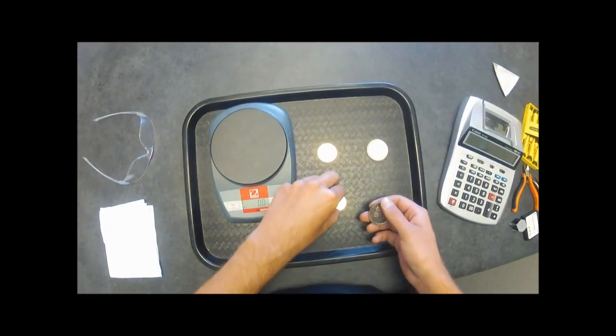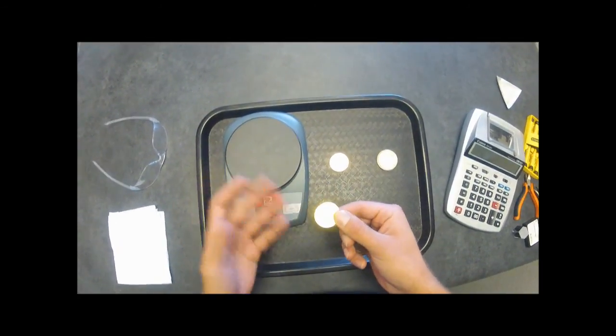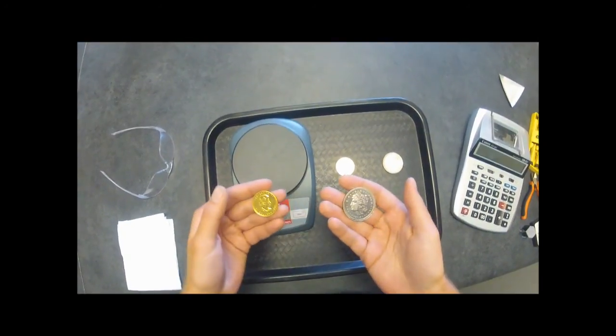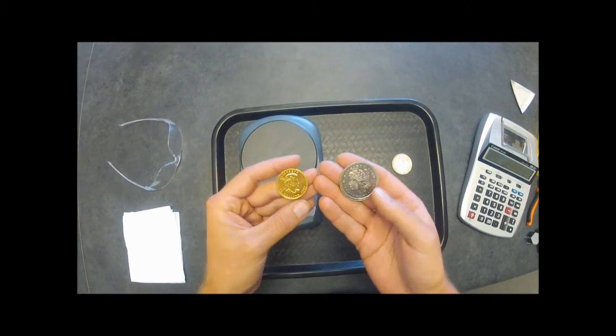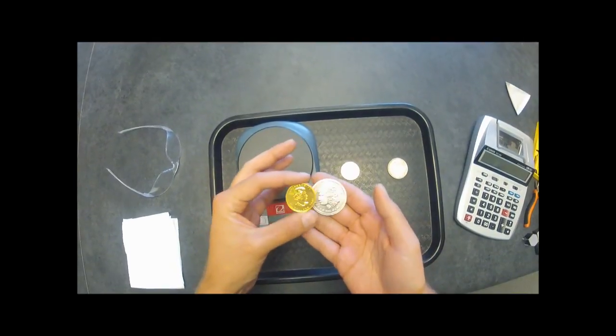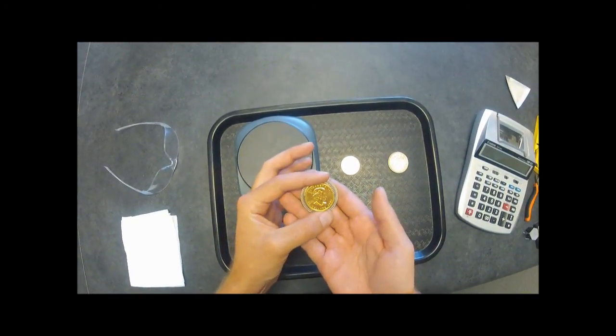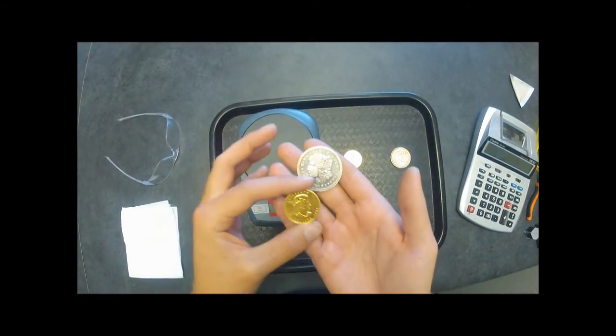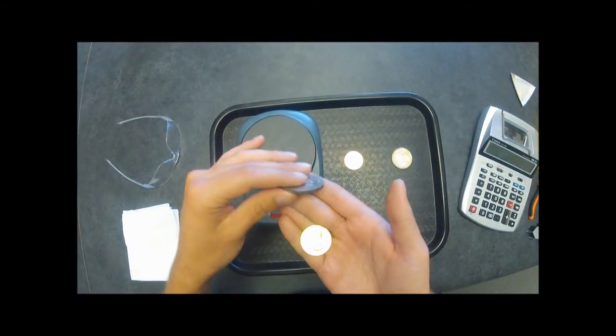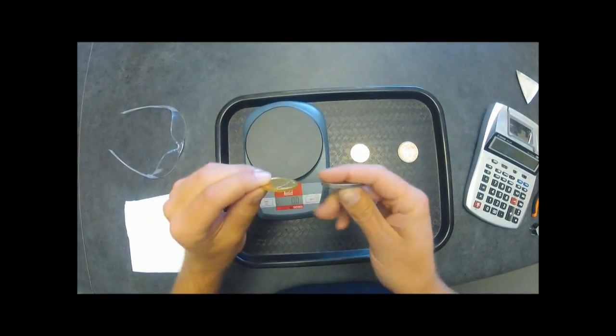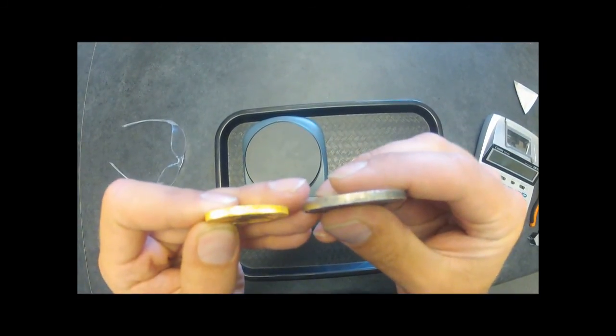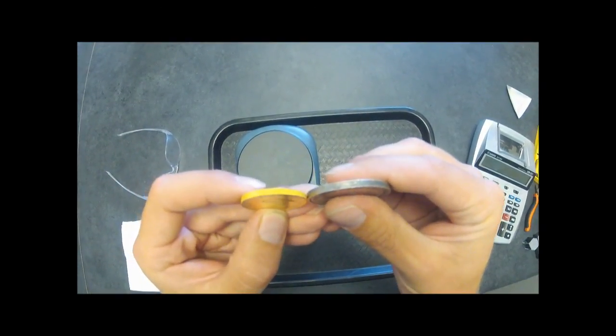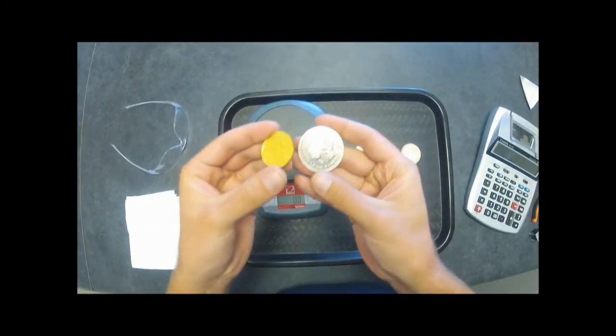One thing that I think is kind of cool about the difference between gold and silver, at least just with the coins, the noticeable difference anyway other than one's yellow and one's silver, is the gold one - they both weigh exactly the same, but it's so much smaller than the silver one. And that's because gold is a lot more dense than silver. The silver one's a little bit thicker than the gold one and a lot bigger around.